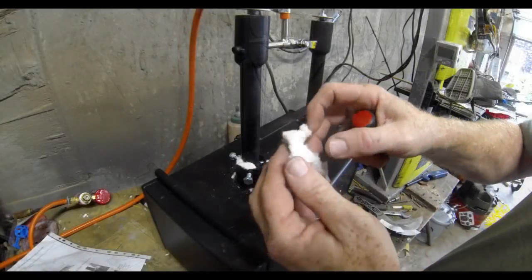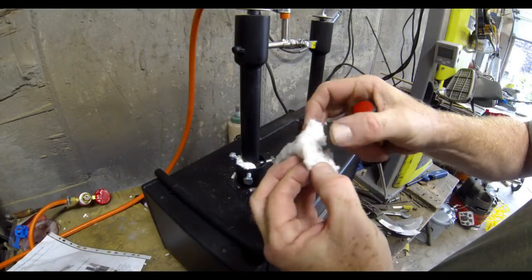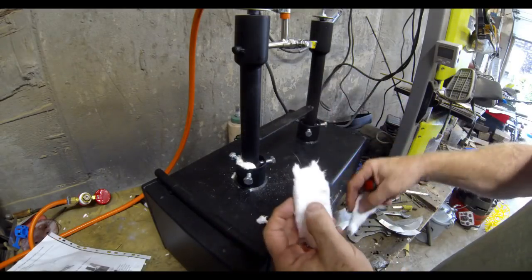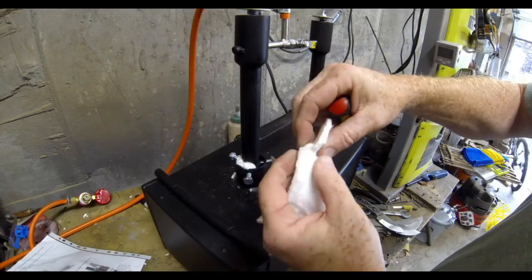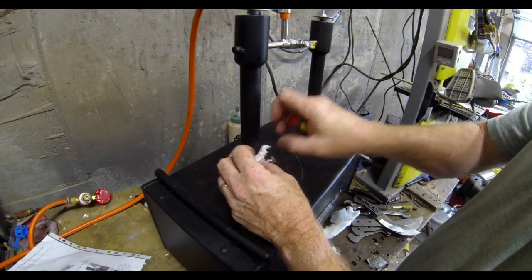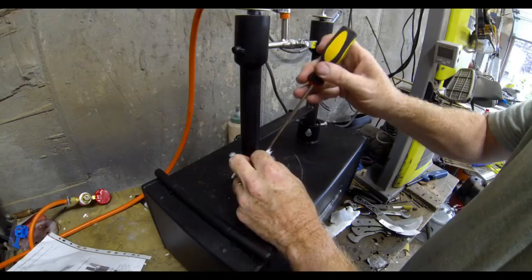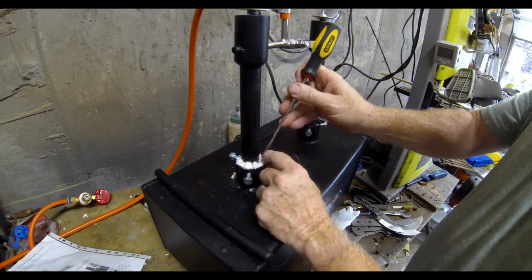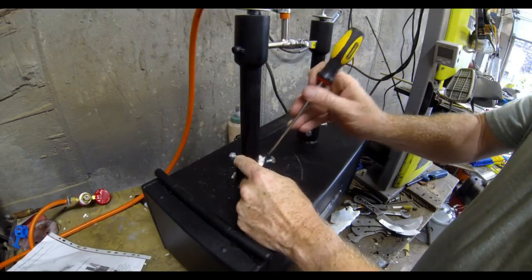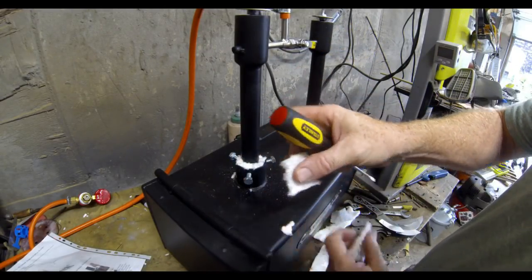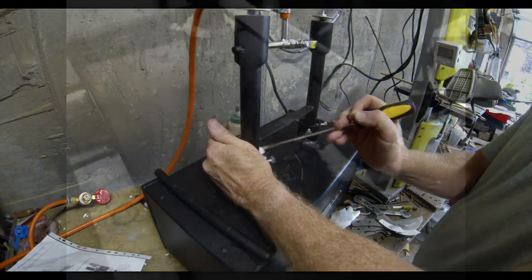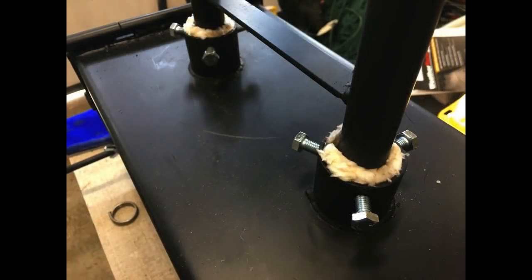In the box also came some additional insulation. I found that if you just peel this and make it thinner, this has to be packed around each one of those burners. I just packed it in there with a screwdriver.